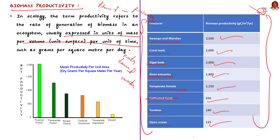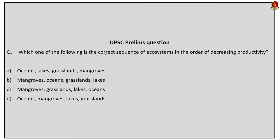The question asks for the correct sequence of ecosystems in decreasing order of productivity. The correct answer is option C — mangroves, grassland, lakes, oceans. This aligns with the productivity values where mangroves/coastal wetlands have the highest productivity among the listed options, while open oceans have the lowest.